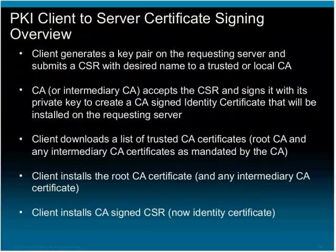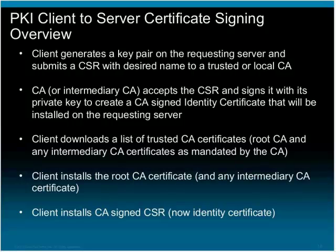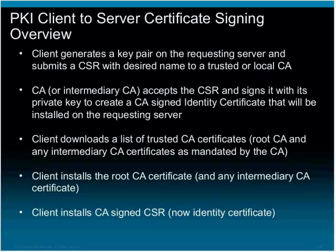Here is how PKI client-to-server certificate signing works. The client generates a key pair and a CSR, signing the CSR using its private key and exchanging its public key via the CSR with the CA. The CA — or the intermediary CA — intercepts the request and signs it depending on whether it is the root CA, the enterprise CA, or a subordinate CA. The CA signs the CSR with its private key and provides its public key via the root CA certificate, plus optionally the intermediary CA certificate, and the signed CSR — now known as the identity certificate.